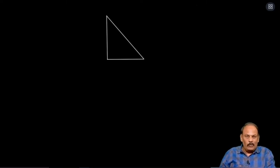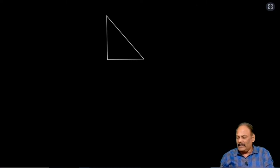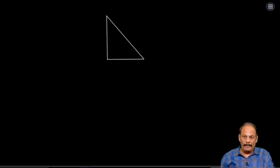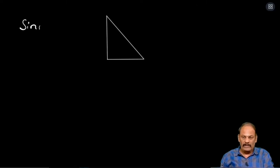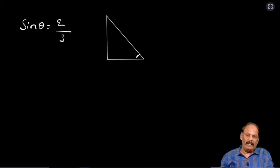To get the command and the basics, we will solve so many sums now. Today we will start. Given one sum: sin theta equal to 2 by 3. He is asking to find all other trigonometric functions. Already we know this is the angle of elevation. Basic definition of sin theta equal to opposite side by hypotenuse.